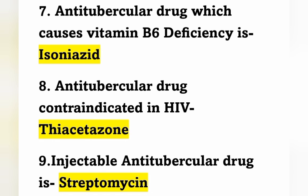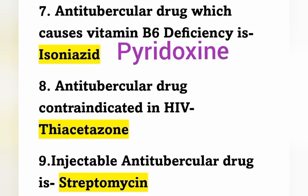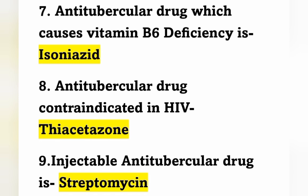Anti-tubercular drug which causes Vitamin B6 deficiency is Isoniazid. Vitamin B6 is Pyridoxine, so if the patient is taking Isoniazid, we have to administer Pyridoxine mainly to reduce the risk of neurotoxicity.